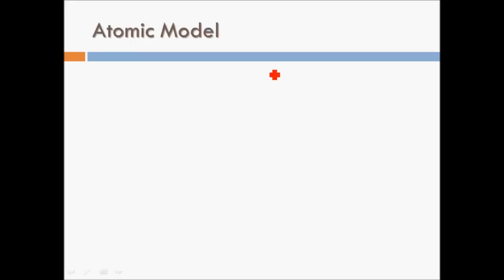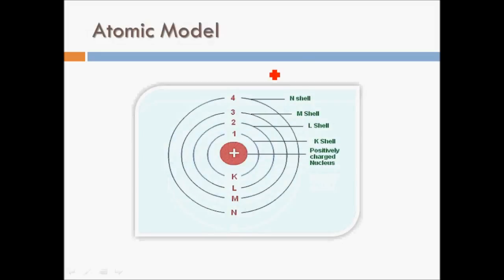Let's have a look at how the model looks in 2D. In pictorial form, it looks similar to what Rutherford said — that neutrons and protons are present inside the nucleus. At that time, neutrons and protons had not yet been discovered, so they just knew there is a nucleus with high positive charge and high mass, and there are concentric circular orbits around the nucleus where the electron revolves.